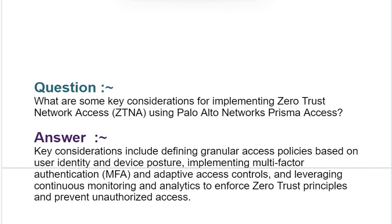Next interview question: What are some key considerations for implementing Zero Trust Network Access (ZTNA) using Palo Alto Networks Prisma Access? Your answer should be: Key considerations include defining granular access policies based on user identity and device posture, implementing multi-factor authentication (MFA) and adaptive access controls, and leveraging continuous monitoring and analytics to enforce zero-trust principles and prevent unauthorized access.